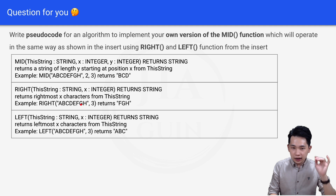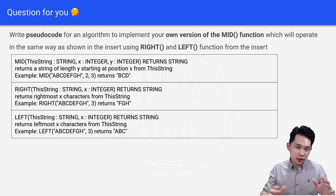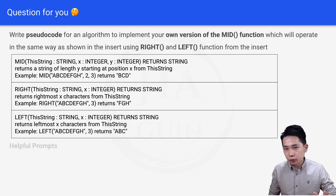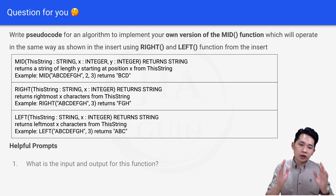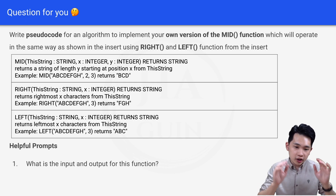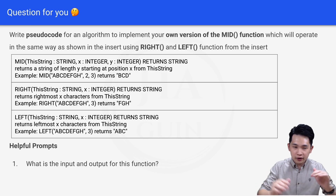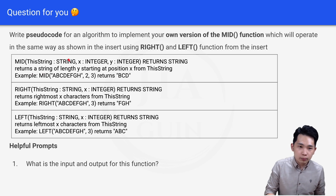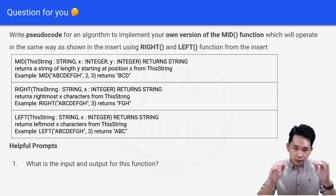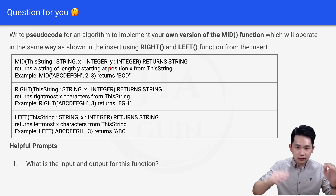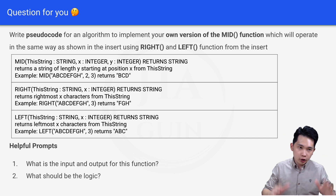You might feel lost because we just covered basic function definition and calling, and this question looks complicated — but don't worry. Here are some helpful prompts. First, what are the input and output for this function? Since you are copying the MID function, the inputs and output are already given: the MID function has three inputs and one output, so your version uses the same input and output.